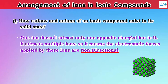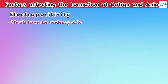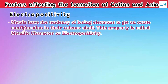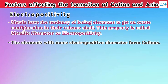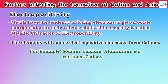Now let's move to the second topic: the factors affecting the formation of cation and anion. In previous topics, we learned that metals have the tendency of losing electrons to get an octet configuration in their valence shell. This property is called metallic character or electropositivity. Elements with more electropositive character form cations — for example, sodium, calcium, aluminium, etc.